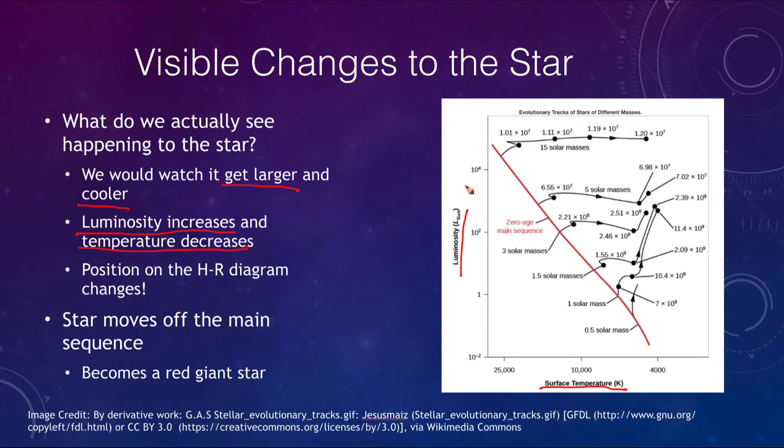So if the luminosity increases, the star is going to move up. If the temperature decreases, the star will move to the right. And that means that overall, the star is going to move from the main sequence towards the upper right portion. Now the exact tracks are shown on the diagram here, and it's a little more complicated process than that. But it is moving off and is going to become a red giant star.